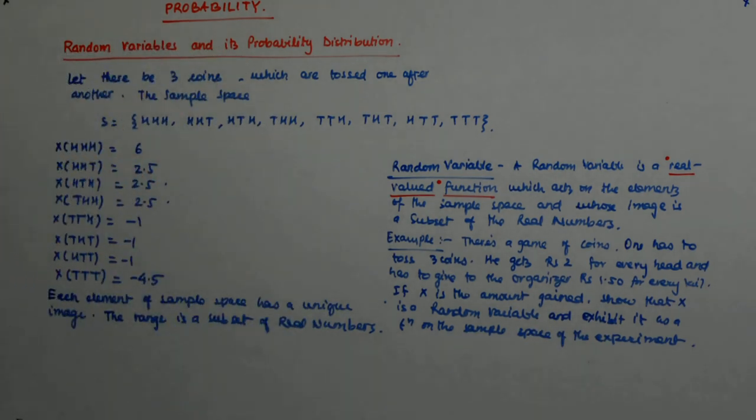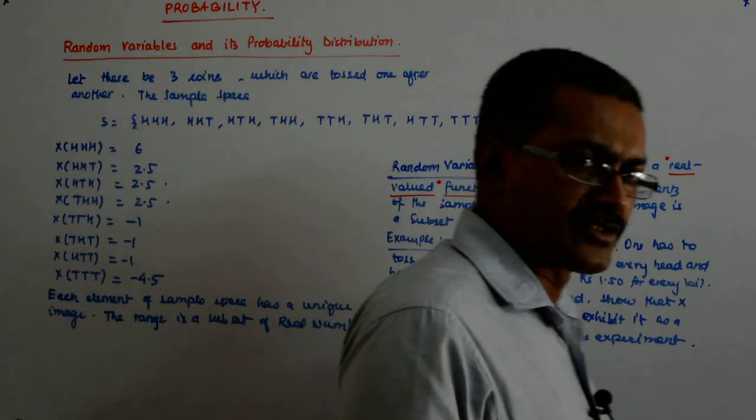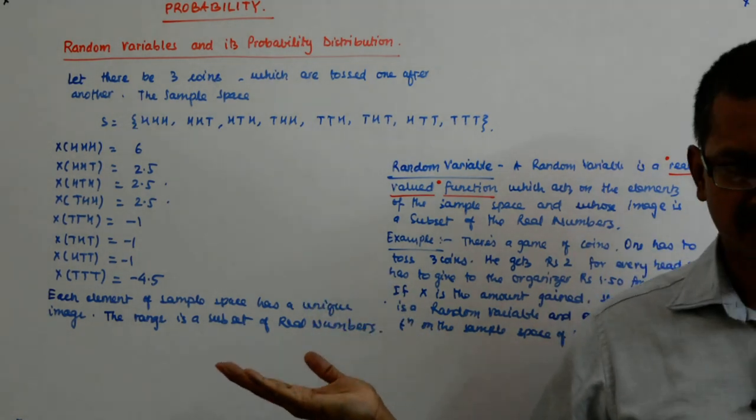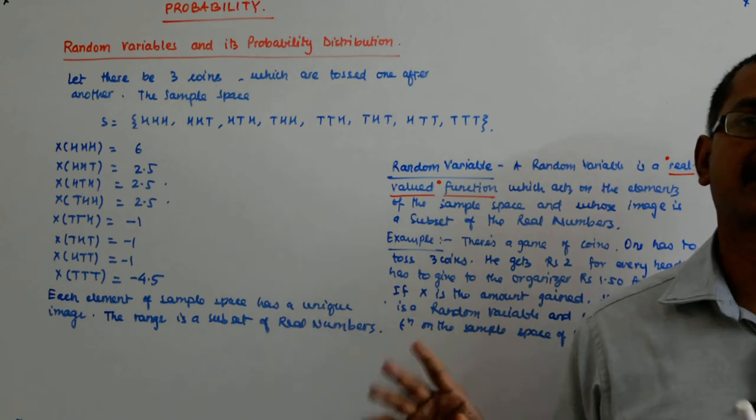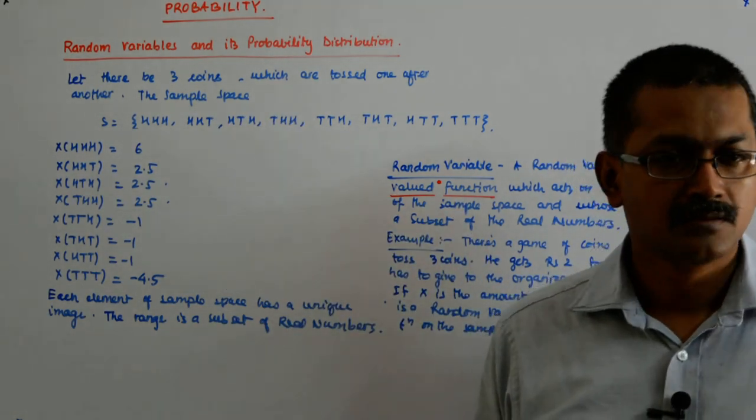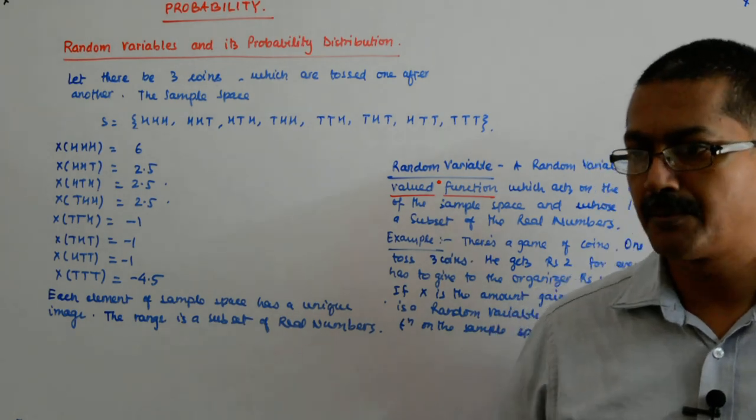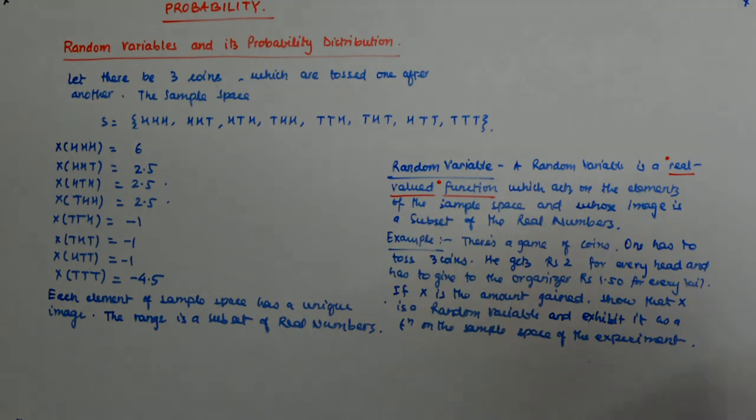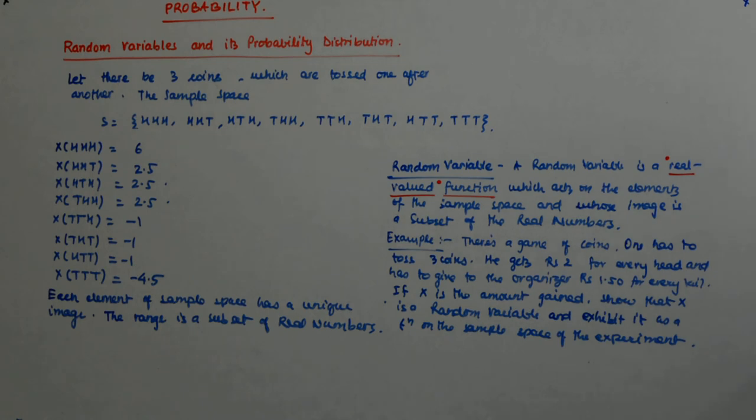So, you will have to show both. There could be functions which are not real valued. Then it will not be a random variable. You will soon understand why, because then we start operating with the random variable. Suppose the outcome is A. Okay, then you will be absolutely stuck. Okay, done? Fine.